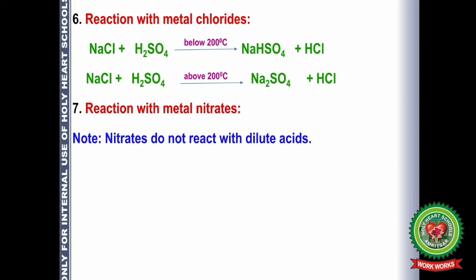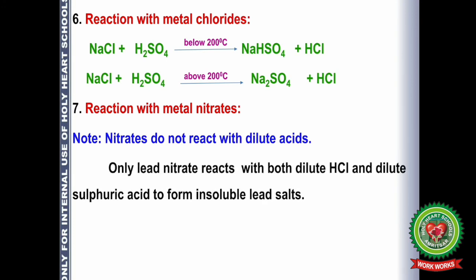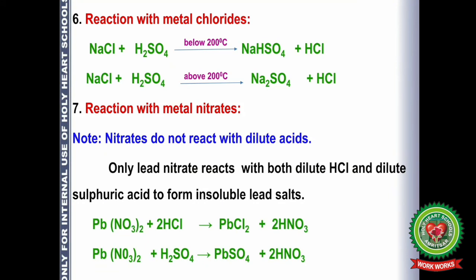Regarding reaction with metal nitrates: acids do not generally react with metal nitrates, but lead nitrate is soluble, so only lead nitrate reacts with both dilute HCl and dilute sulfuric acid to form insoluble lead salts. Lead nitrate with HCl gives lead chloride and HNO₃; lead nitrate with H₂SO₄ gives lead sulfate and HNO₃ — the salt receives its anion from the acid.